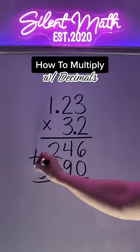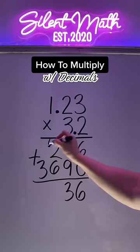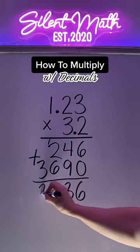The next step is to add up these numbers. 6 and 0 make 6, this makes 13, carry the 1, this makes 9, and then we have 3.